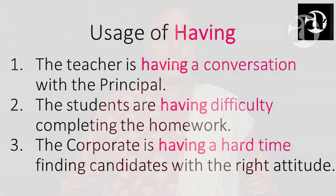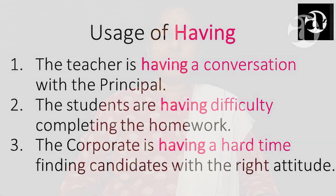Having can also be used as the participle form in verb phrases to indicate actions happening at the moment of talk. For example: The teacher is having a conversation with the principal. The students are having difficulty completing the homework. The corporate is having a hard time finding candidates with the right attitude. In these sentences, having is used as the participle form in verb phrases to indicate action happening at the moment of talk.